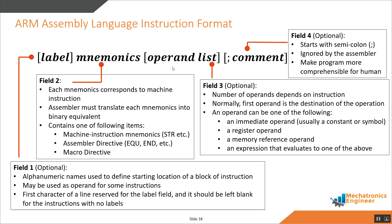The first field is the label. Label is an optional field of an assembly statement. Labels are alphanumeric names used to define the starting location of a block of statements. Labels can be subsequently used in a program as an operand of some other instruction. When creating the executable file, the assembler will replace the label with the assigned value. Labels must be unique; an identical label encountered by the assembler will generate an error.